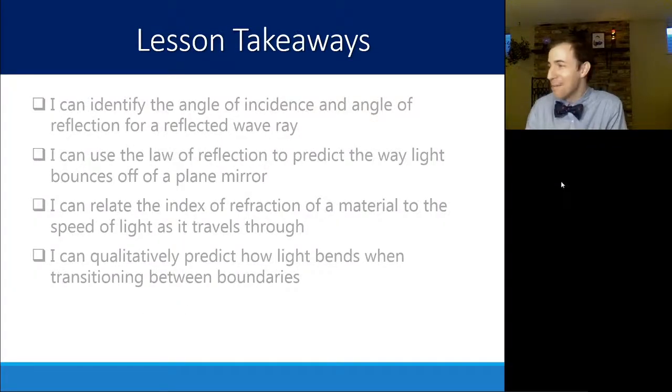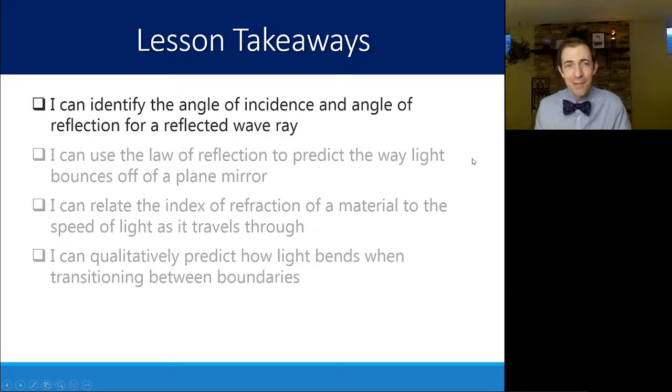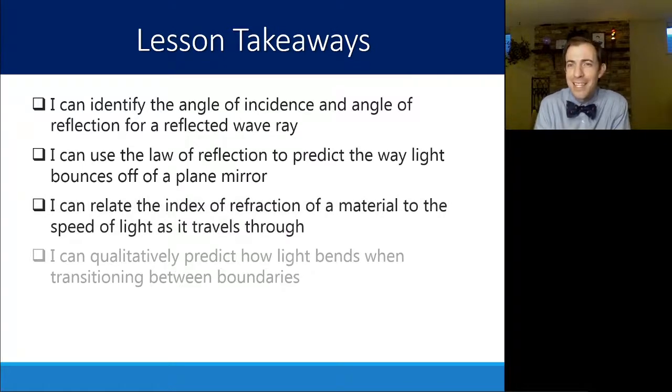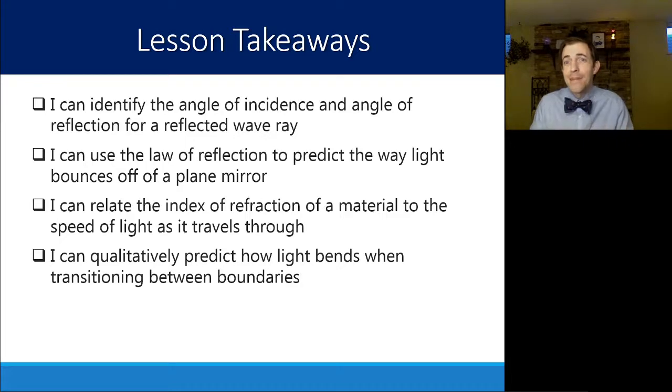All right, so to wrap things up here, the takeaways from this lesson is you should be able to identify the angle of incidence and angle of reflection for a reflected wave ray and use that to predict how light is going to bounce off of a mirror. You should also be able to relate the index of refraction to how fast light travels through that medium and use that to qualitatively predict how light bends transitioning between these medium boundaries. In our next video, we will quantitatively figure this out and compare those angles and then get a little bit more advanced in this idea of refraction and some other things that could happen along the way. Thank you.